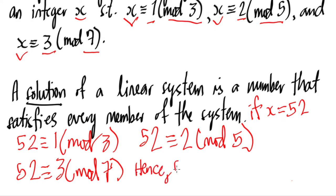Hence we can say that 52 is a solution. If you're going to check out some other integers, we can see that negative 53 is also a solution, and 157 is also a solution. In fact, this system has infinitely many solutions. You may verify that 22 is not a solution of the problem.